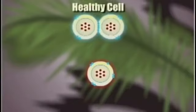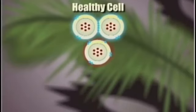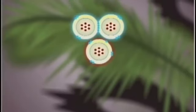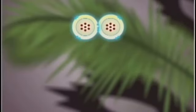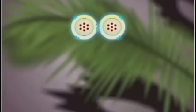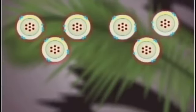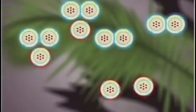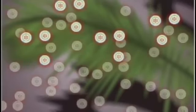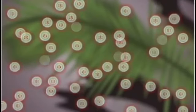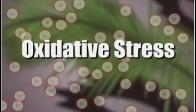These free radicals will start attacking healthy, nearby cells in an attempt to replace their missing electron. When the attacked molecule loses its electron, it becomes a free radical itself. This can cause a chain reaction to occur, resulting in the disruption of millions of nearby molecules. This chain reaction is known as oxidative stress.